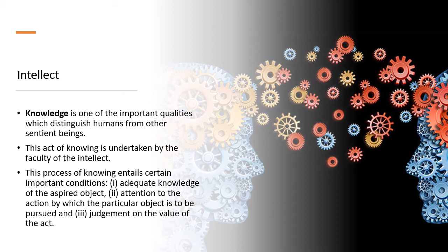So we have this act of knowing as undertaken by the faculty of the intellect. And this process of knowing entails certain important conditions. Number one, we have that adequate knowledge of the aspired object. Number two, we have this attention to the action by which the particular object is to be pursued. And the last, we have this judgment on the value of the act.